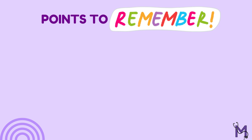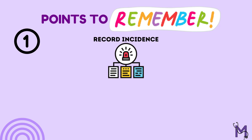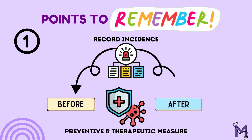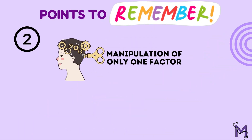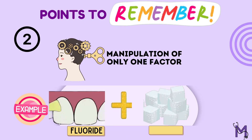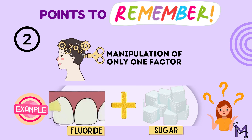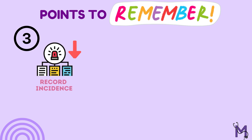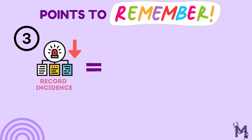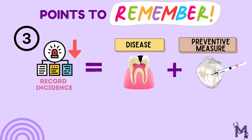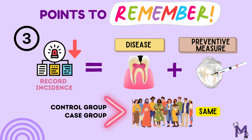There are certain points to remember while conducting this type of trial. First, the incidence of the disease should be recorded before and after the introduction of the preventive or therapeutic measure. Second, it should manipulate only one factor — for example, if alongside fluoridation you also decrease the sugar intake of the population, we will not know if it was the fluoridation that acted as the preventive measure. Third, there should be a large reduction in the incidence of disease following the introduction of the preventive measure, since there is no separate control group in this case.